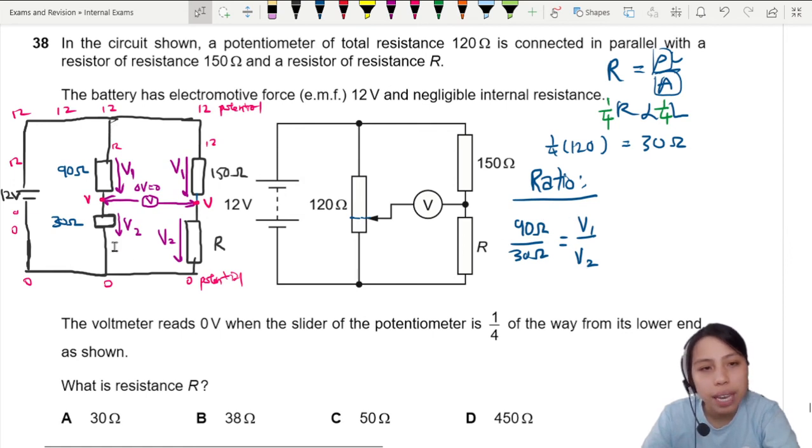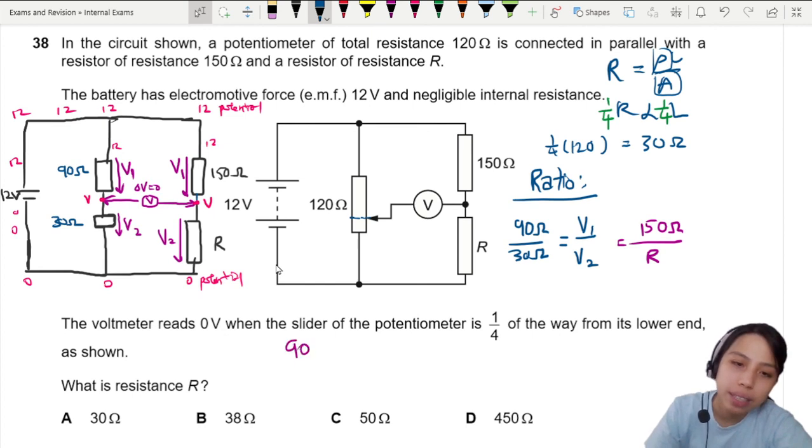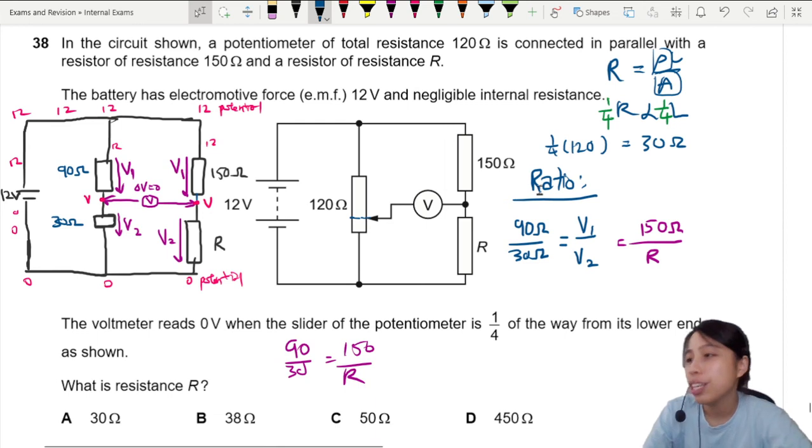But this V1 over V2 is the same on the right side of this potentiometer. So this ratio, 150 over R, is also the same ratio. I'm going to write here 150 ohm over R, which is what we want to find. So we can say 90 over 30 equals 150 over R. And that's where you will find your answer. You get R is 50 ohm.